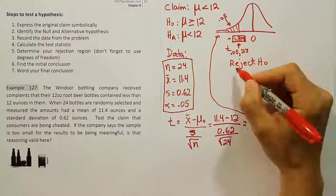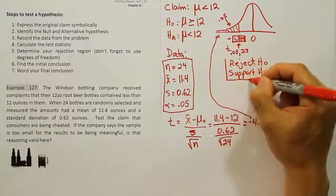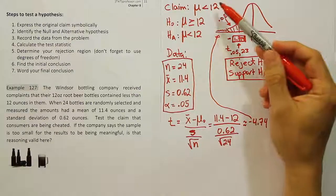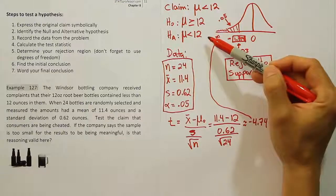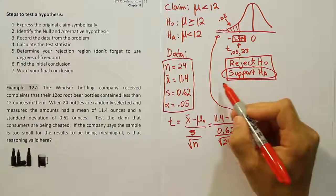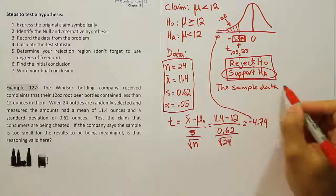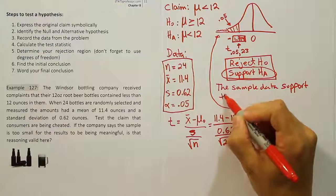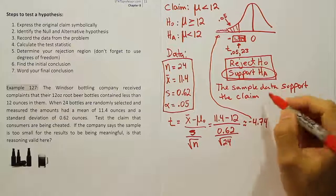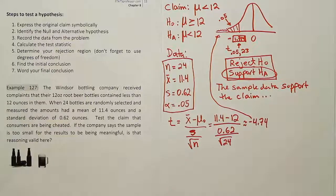Remember, we're always testing the null hypothesis. So in here, we conclude that we reject it. And therefore, we support the alternative. Remember, that goes hand in hand. If you do one, you do the other. Now let's look at the claim. The claim is the same as the alternative. That means we should use this phrase for the response to the question. So we're going to say the sample data support the claim that consumers are being cheated. So what we're saying here is that basically the consumers are right. There's not enough soda in these cans on average. It's below 12 ounces. The can says 12 ounces. It doesn't seem to have 12 ounces in there, though, on average.